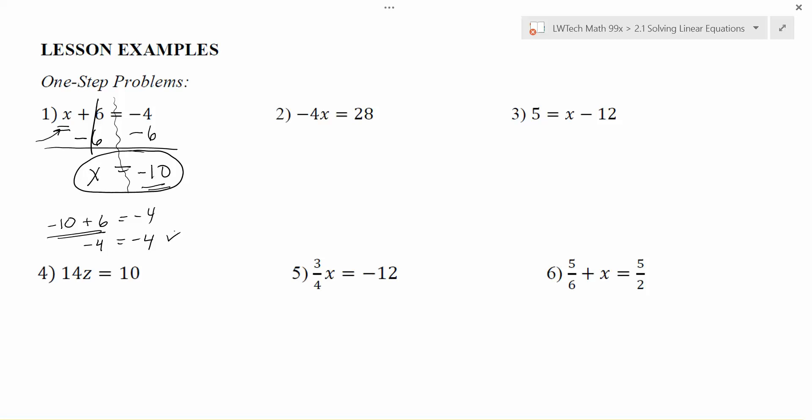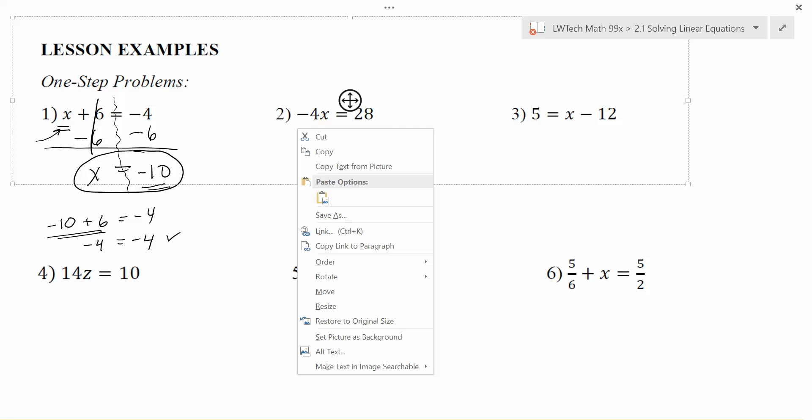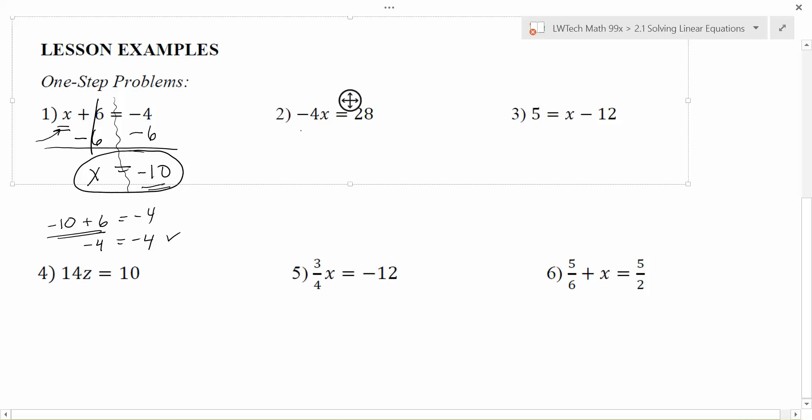Basically, what we're doing is we're undoing anything that happened. It's kind of like reverse order of operations. Whatever happens first, we undo it by going backwards. Right now we have -4 times x. So to get the x by itself, we're going to do the opposite of multiplying, and the opposite of multiplying is dividing. So instead of multiplying by -4, I'm going to divide by -4 to undo what's happening. And if I do something on one side of the equation, I also have to do it on the other side.